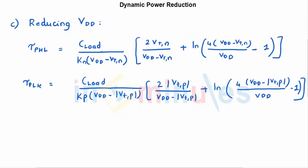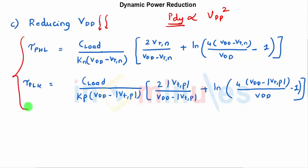We will have an exclusive clip on voltage scaling, but for now: if we reduce VDD, dynamic power is proportional to VDD squared, so reducing VDD considerably reduces dynamic power. However, from the delay equation, reducing VDD keeps increasing delay, making the circuit very slow. This presents a trade-off and we will examine whether it is a good idea to reduce VDD to a certain value depending on the application.